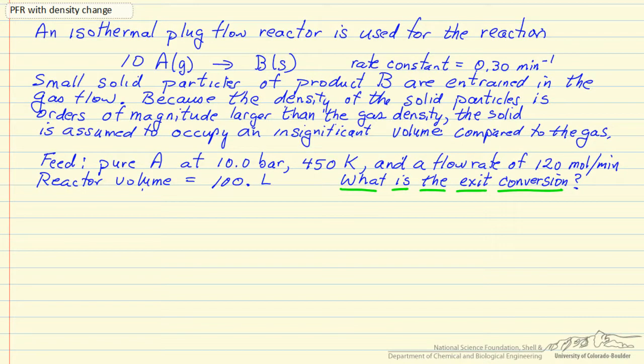In this example, we're looking at an isothermal plug flow reactor, and it's used for a reaction that results in a phase change. So A in the gas phase, 10 molecules of A make 1 molecule of B, which is a solid, given the rate constant.